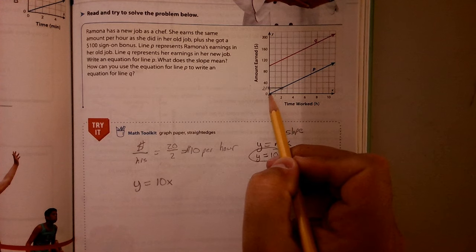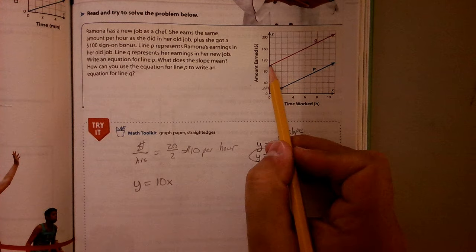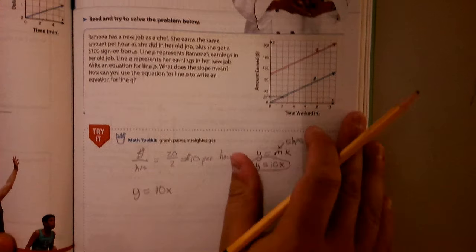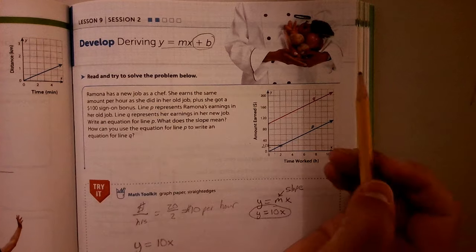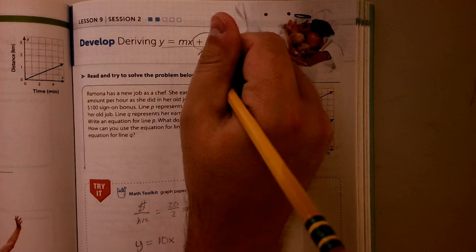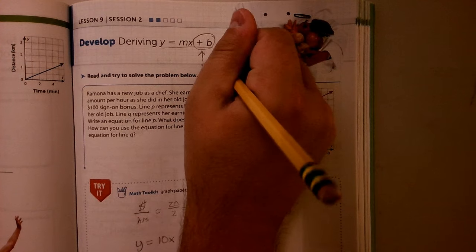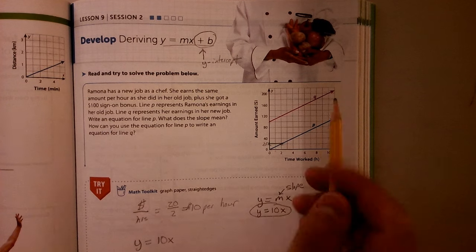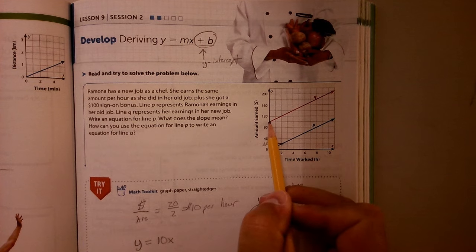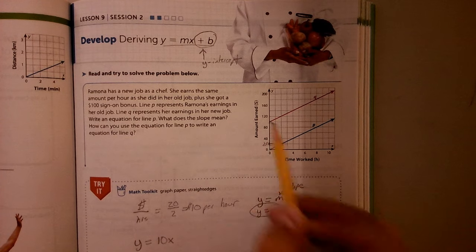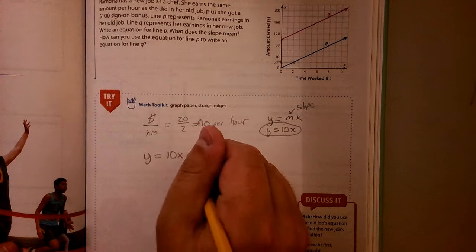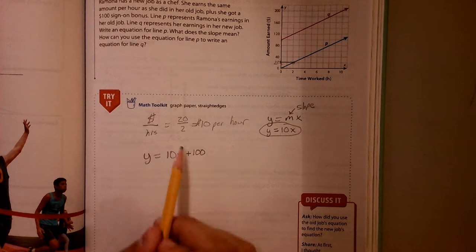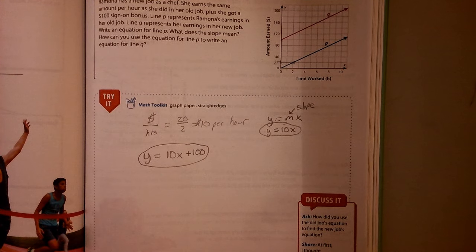Now the difference is where they started. This one starts at 0, 0, a proportional relationship, but this one's starting way up here at 100. So that's where this plus B part comes in. So that plus B is what we call our Y-intercept. It's going to be something you want to write down there, our Y-intercept. We look at where it crosses the Y-axis, and it crosses at 100. So since it crosses at 100, I'm going to put plus 100 at the end. So this is our equation for P, and this is our equation for Q.